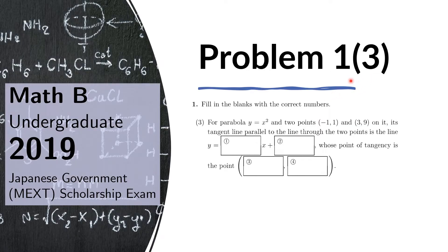Problem 1(3). For the parabola y equals x squared and two points (-1, 1) and (3, 9) on it, its tangent line parallel to the line through the two points is the line y equals blank x plus blank, whose point of tangency is the point blank blank.